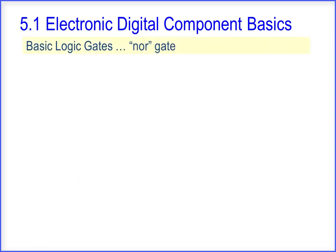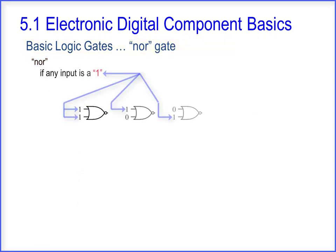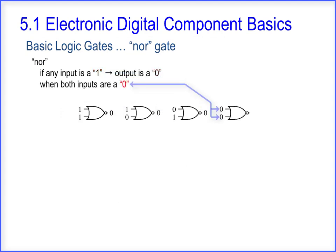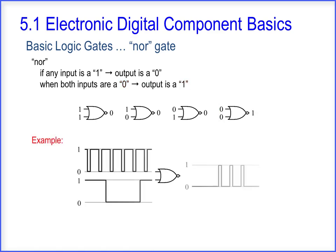For a NOR gate, if any input is a 1, the output is a 0. When both inputs are a 0, the output is a 1.